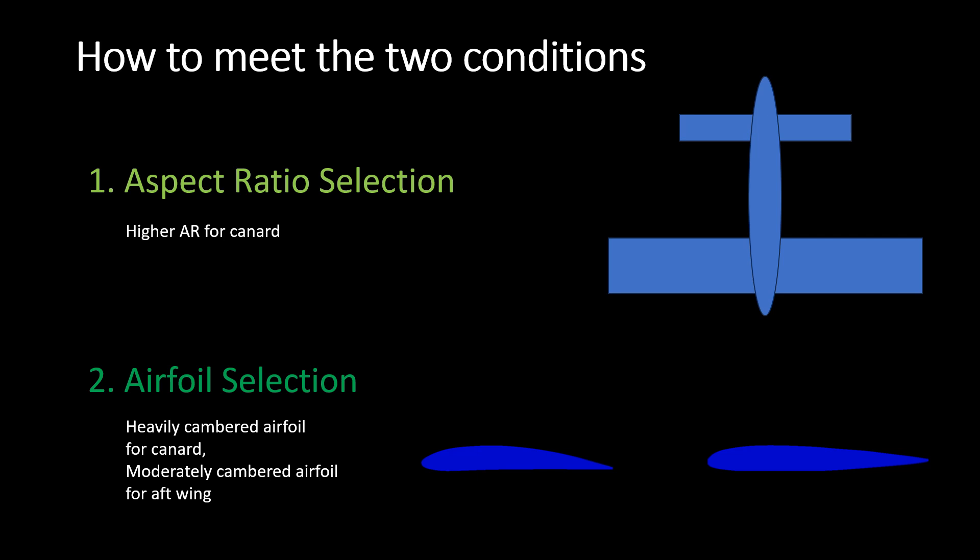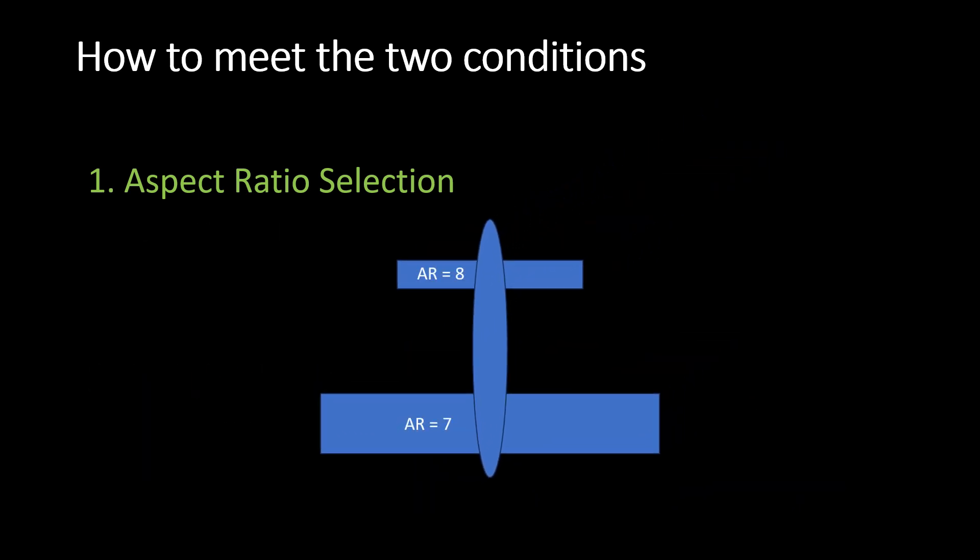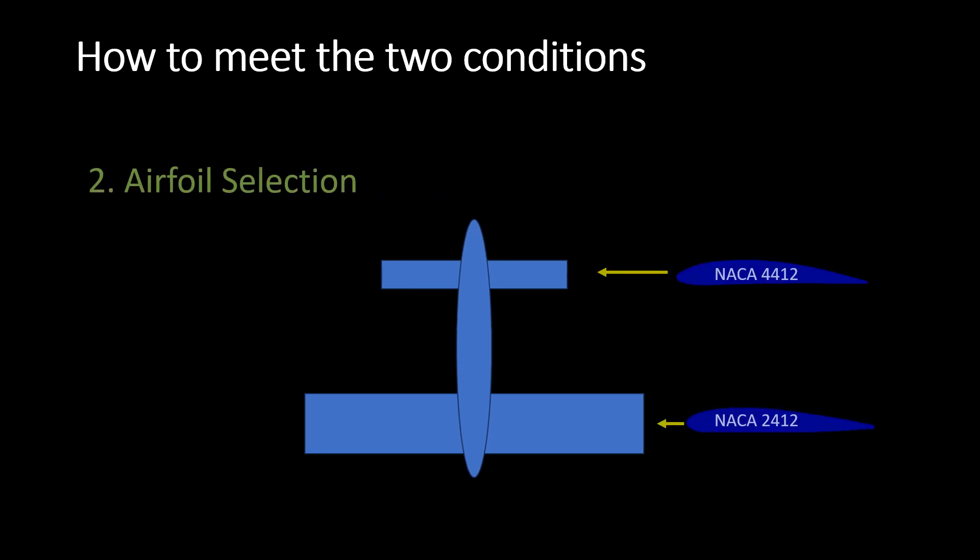In case of our example, let's choose a canard aspect ratio of 8 and aft wing aspect ratio of 7. As for the airfoils, let's choose the NACA 4412 airfoil, which is a heavily cambered airfoil for the canard, and the NACA 2412, a moderately cambered airfoil for the aft wing.